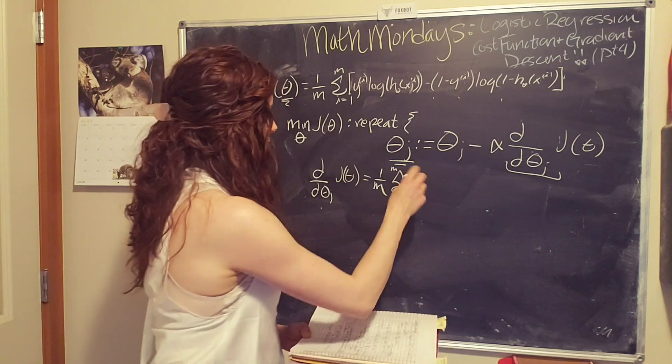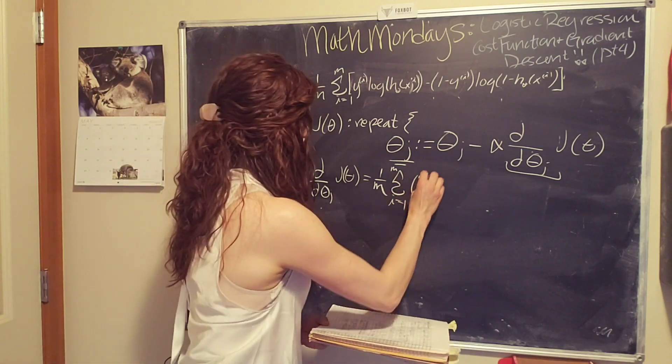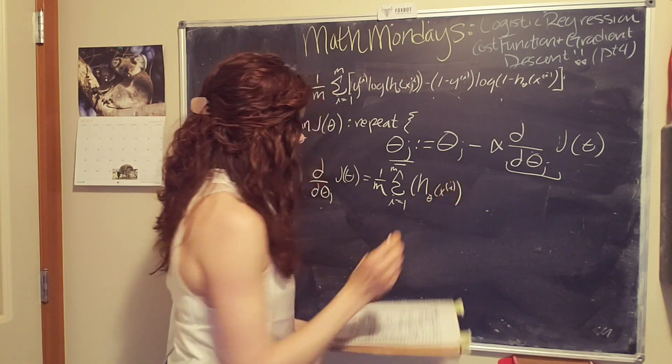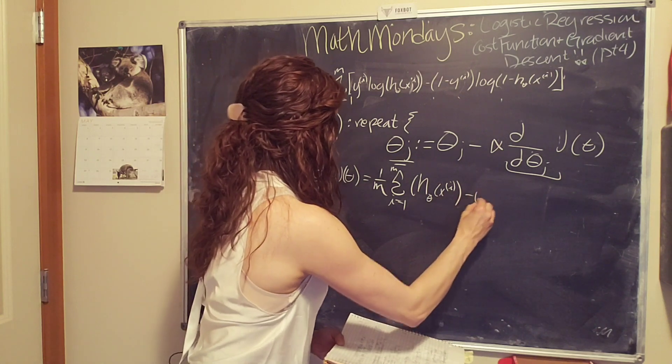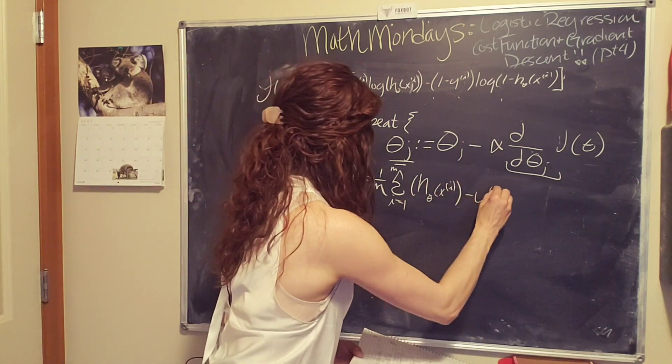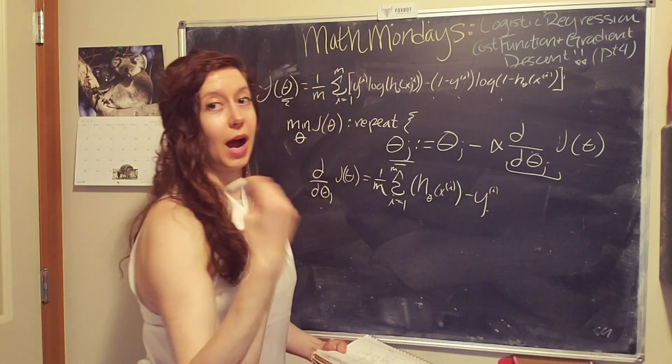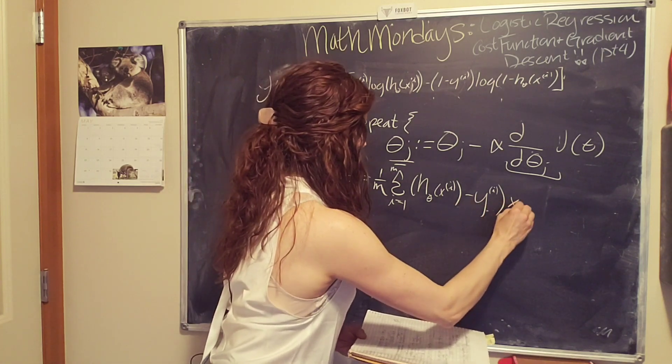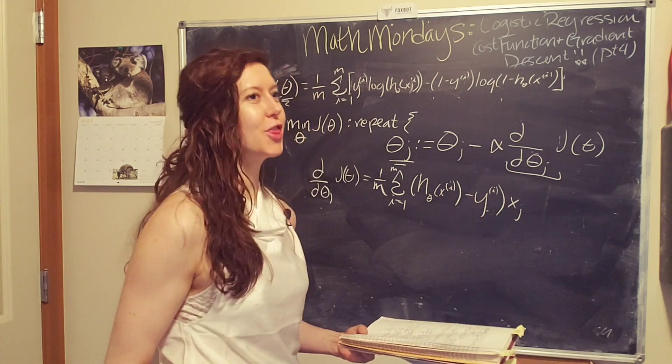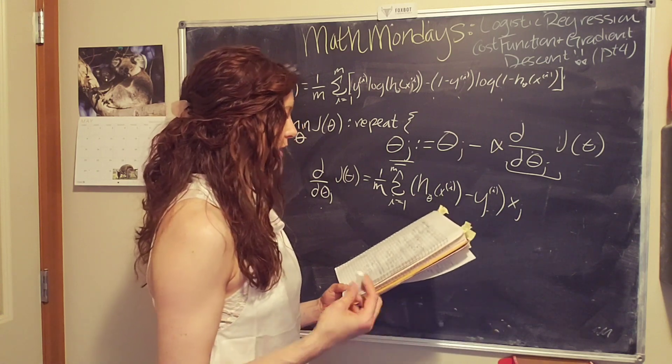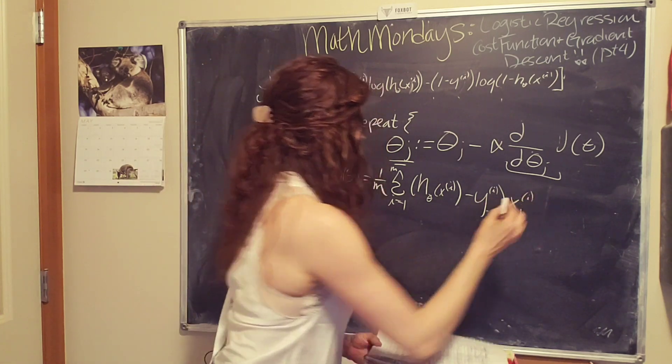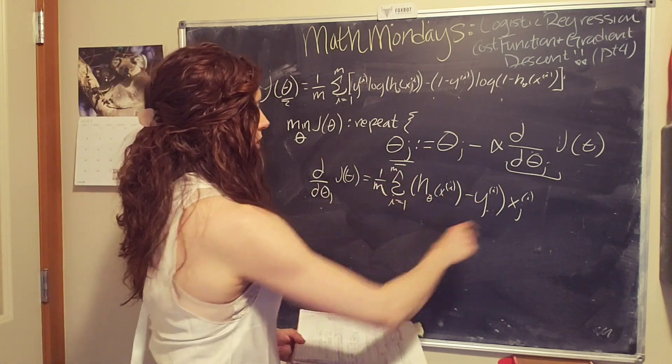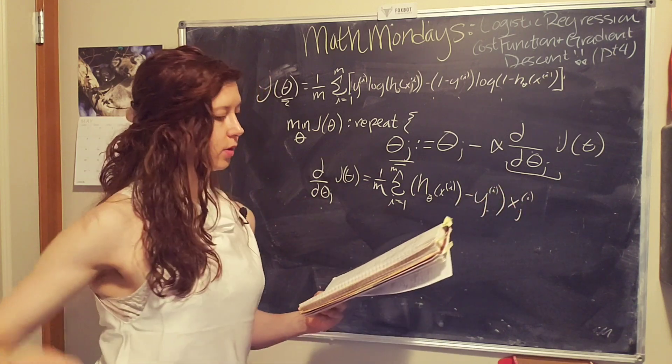So from i equals one to m, and so the partial derivative is going to be h theta of x to the i minus y to the i. Well, not to the i, but it's the i-th y value of our data set times the j-th component of the j-th x. Okay, so then we just plug this in to our pseudocode and we repeat.